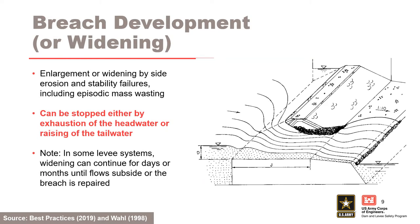In the final phase, the breach has usually reached its full depth and continues to widen as long as a driving hydraulic head is available. Widening is accomplished through a combination of foundation and structure erosion and stability failures, which includes episodic mass wasting of the material from the banks of the developing breach. The widening can be stopped either by exhaustion of the head water or rising of the tail water that reduces breach inflow to non-erosive velocities. In some levee systems, widening can occur for days or months until flows subside or the breach is repaired. The end breach time in the HEC-RAS model can occur before the true end of the breach widening phase, as the hydraulic model typically only cares about the main part of the formation and widening phase.